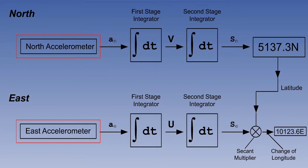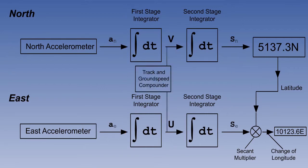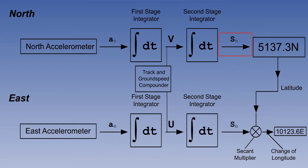We have a north and an east accelerometer. They sense every change of aircraft movement and pass it to first stage integrators. The first stage integrators continuously add up these accelerations, thereby converting them to velocities. The velocities are used to calculate track and ground speed, and they are also passed to second stage integrators where they are converted to distance gone.